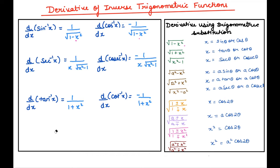Today we start finding derivatives of inverse trigonometric functions. Before starting, keep in mind the algebra of differentiation: rules remain the same. If there are two functions in addition, product, or quotient, we apply sum, product, or quotient rules. For composite functions, we apply the chain rule. Only the basic functions involved are now inverse trigonometric.